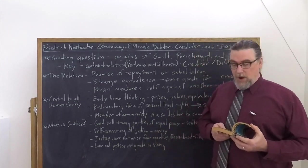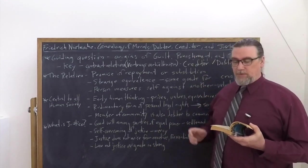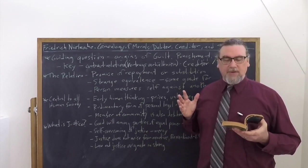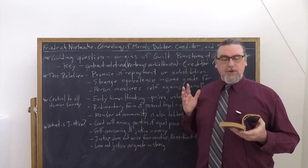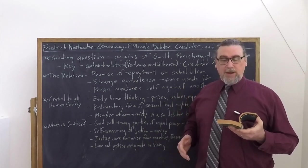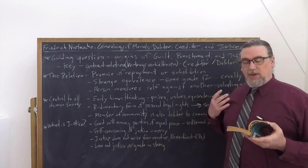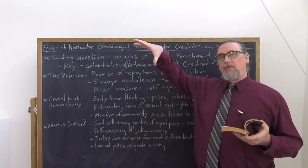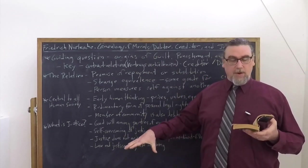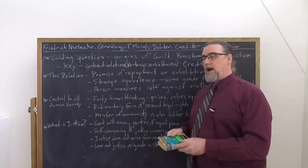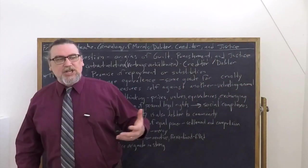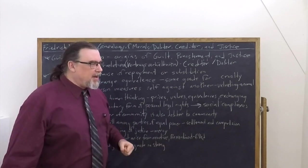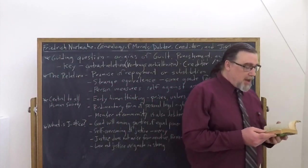He says, let's be clear as to the logic of this form of compensation. It is strange enough. An equivalence is provided by the creditors receiving in place of a literal compensation for an injury, thus in place of money, land, possessions of any kind, perhaps even food, a recompense in the form of a kind of pleasure. What is the pleasure that they're allowed? The pleasure of cruelty. And he spends several different sub-chapters in this essay talking about that.